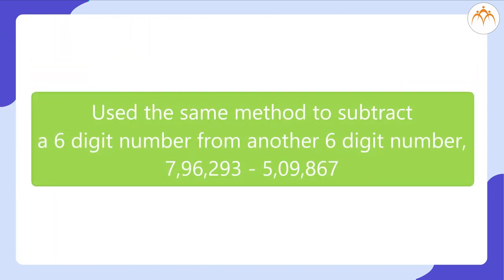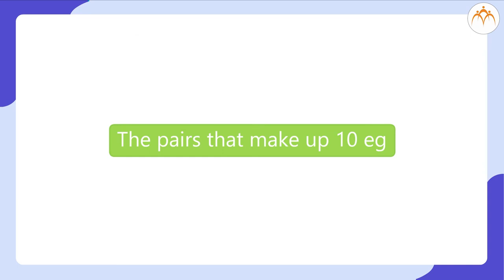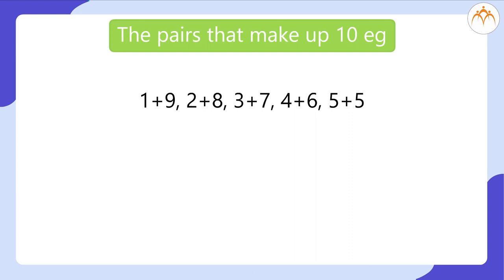I use the same method to subtract a 6-digit number from another 6-digit number — that is 7,96,293 minus 5,09,867 — and got the following answer. Just check whether you also found the same answer. If you know the pairs that make 10 — for example 1 plus 9, 2 plus 8, 3 plus 7, 4 plus 6, 5 plus 5 — then subtraction becomes easier. You can quickly say 11 minus 3 equals 8 because 10 minus 3 equals 7. Keep trying newer quick methods.